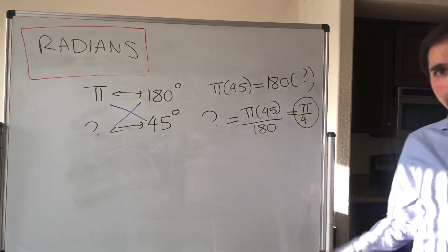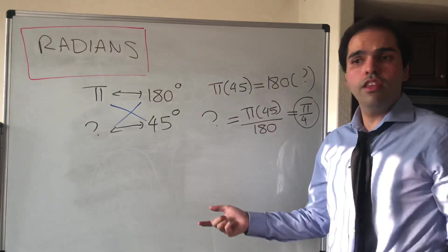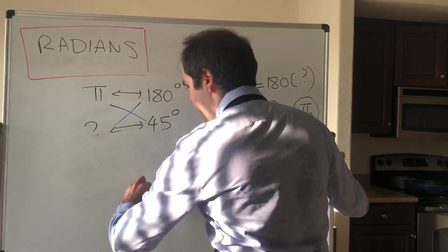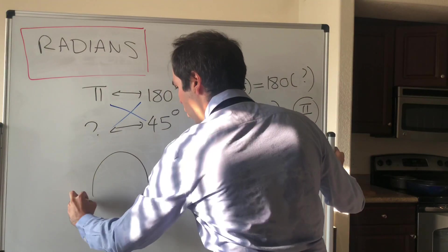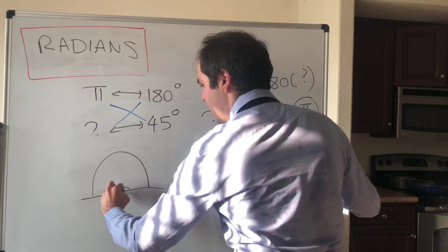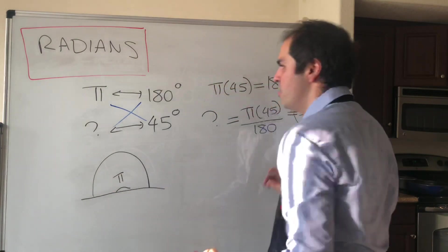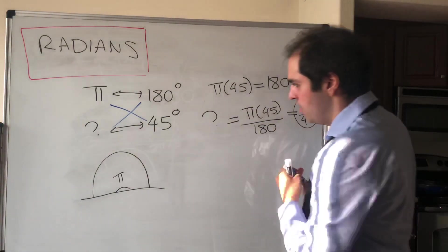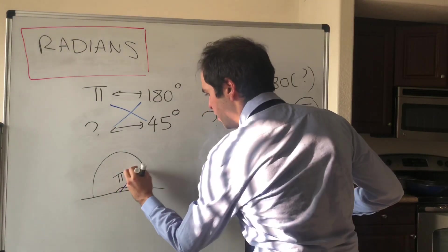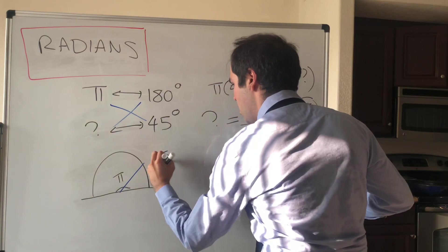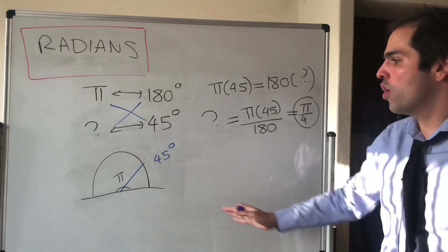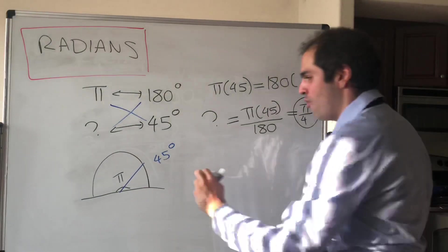And again, if you think of it in terms of the half circle, hopefully that should make sense as well. Because again, remember the half circle is π, which is 180. Then what is 45 degrees? Well, it's roughly here. And notice you're kind of cutting this half circle into 4, so it should be π/4.